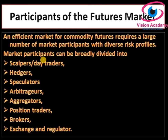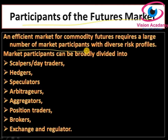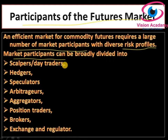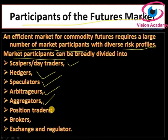Let us now look at who the participants in the futures market are. An efficient market for commodity futures requires a large number of market participants with diverse risk profiles. Such market participants can be broadly divided into: scalpers or day traders, hedgers, speculators, arbitrators, aggregators, position traders, brokers, exchanges, and regulators.